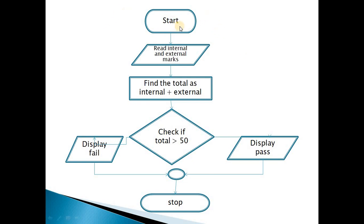To begin, start is represented by an ellipse symbol, and a parallelogram is used to represent reading or writing statements. Here we are reading internal and external marks. The process box is represented by a rectangular box — here we calculate the total as the sum of internal and external marks. We then verify the condition: is the total greater than 50? If the total is greater than 50, we display pass. If the total is less than 50, we display fail.